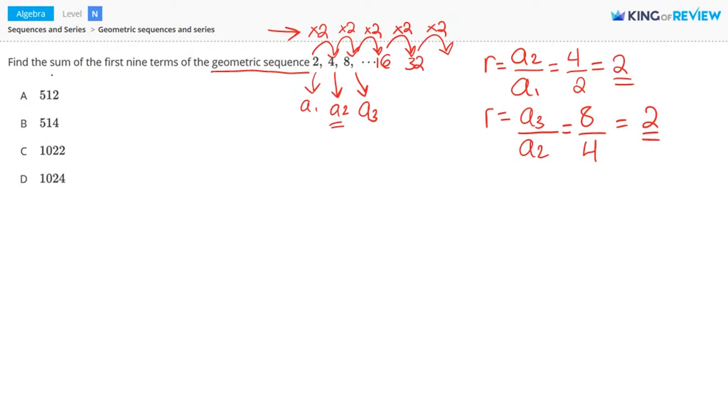Now here we're asked to find the sum of the first 9 terms of this geometric sequence. Well one way to do this is to calculate these 9 terms by multiplying by 2 for each term to get the next term and add them all up. But there's also a formula for the sum of a geometric series.